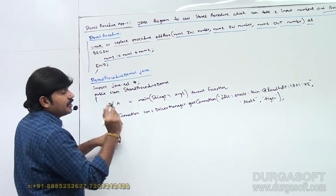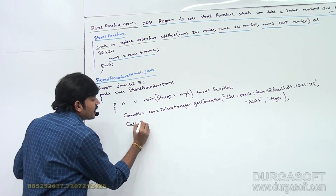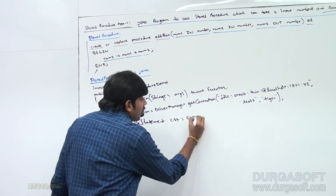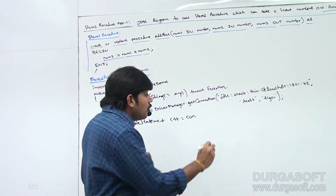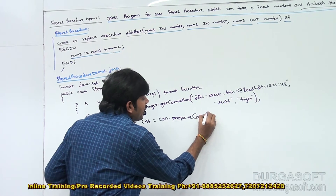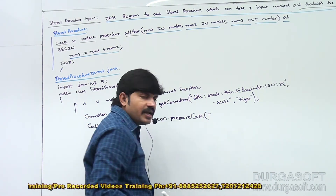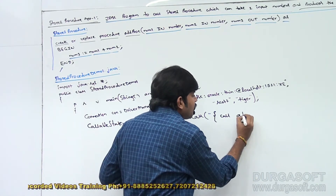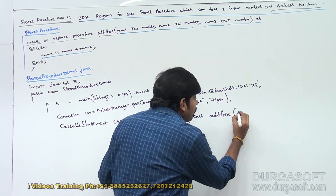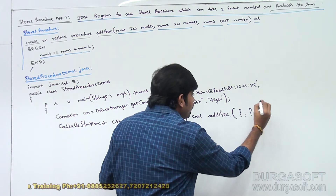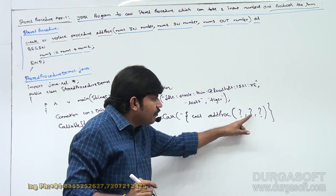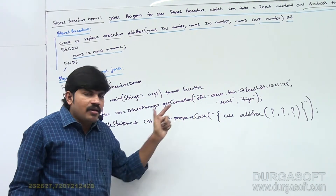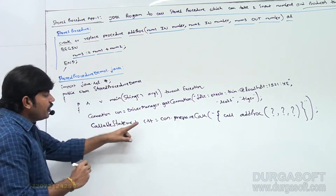First, create a CallableStatement object. The syntax is: CallableStatement cst = con.prepareCall(). There is a special syntax for calling a stored procedure: {call yard_proc(?, ?, ?)}. How many parameters? Three — two IN parameters and one OUT parameter — so three question marks. So: CallableStatement cst = con.prepareCall("{call yard_proc(?, ?, ?)}").